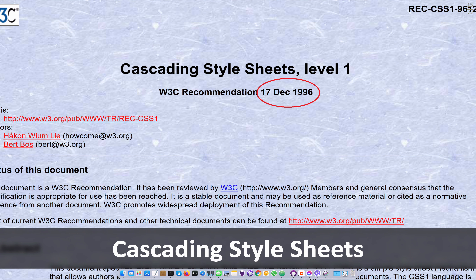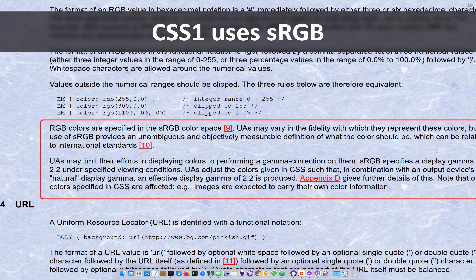Six months later, we had the first recommendation for cascading style sheets. Pretty much at my insistence, it used sRGB. Most people were like, 'RGB — we know what RGB is, it's what you give to the screen and it makes colors.' I said no, it has to be actually defined colorimetrically, because later on that will be important. You can see from the wording that people had very low expectations — basically 'please try to have a consistent gamma' is what the spec says, and beyond that, this is what color it should be, but it probably won't.